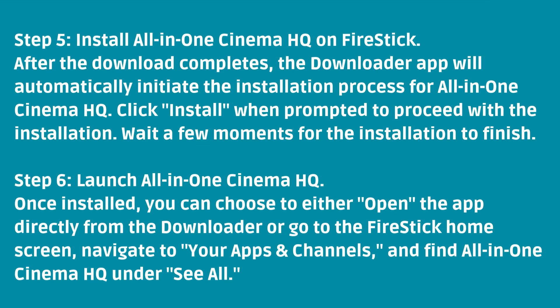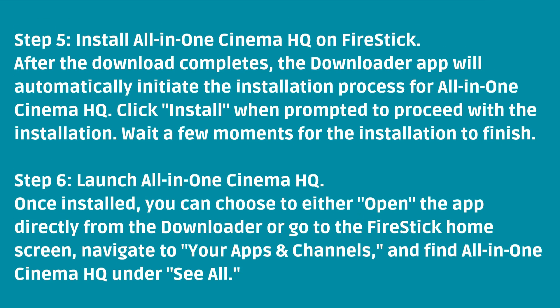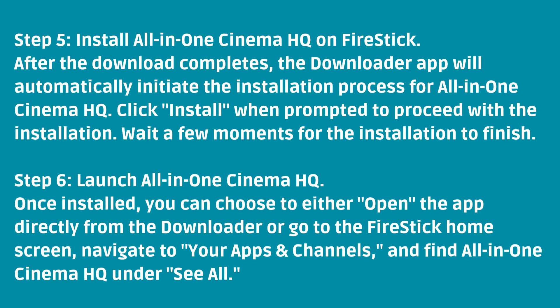Step 5: Install All-in-One Cinema HQ on Fire Stick. After the download completes, the Downloader app will automatically initiate the installation process for All-in-One Cinema HQ. Click Install when prompted to proceed with the installation. Wait a few moments for the installation to finish.